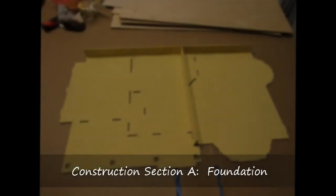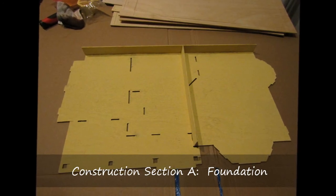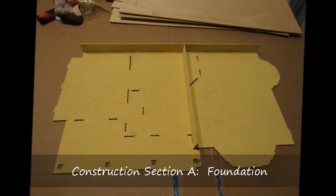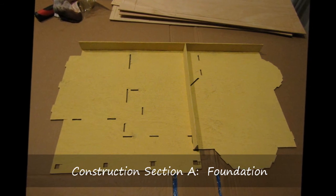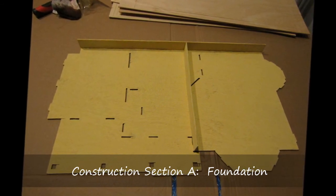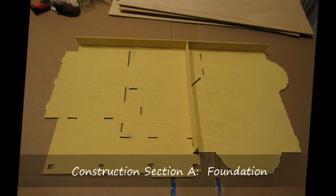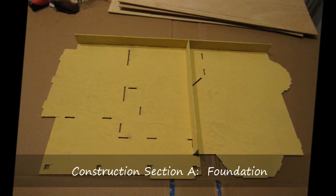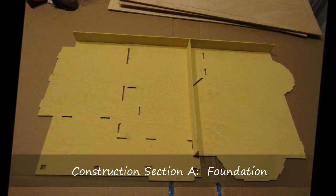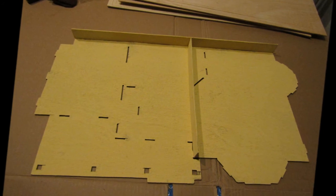Once the pieces have dried, it's ready for assembly. I turn it over where the underside of the floor is facing up. I place the two foundation support pieces in a tee where the backs, the backside, is butted up to the backside of the house.